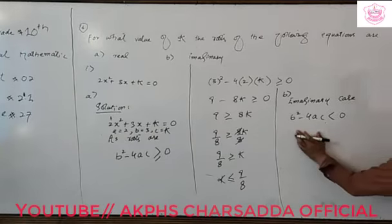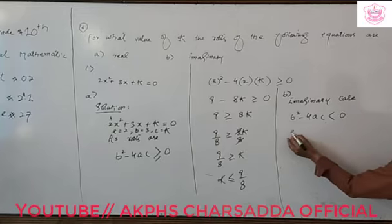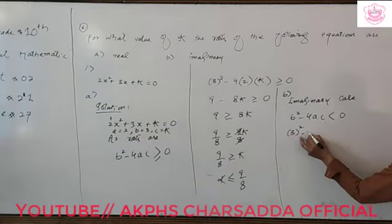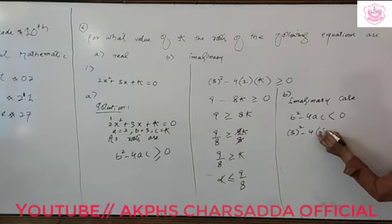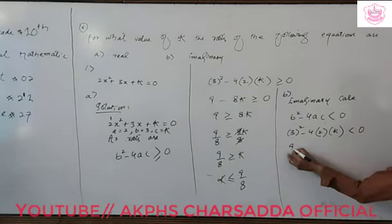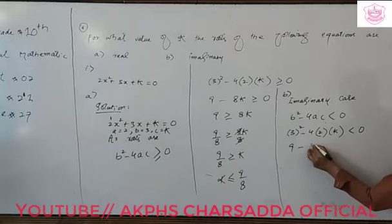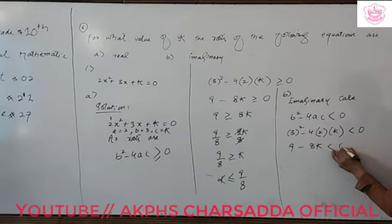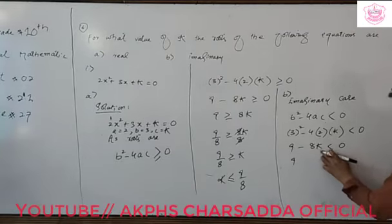So here we put b as 3, so 3 square minus 4 times a, which is 2, times c, which is k, is less than zero.